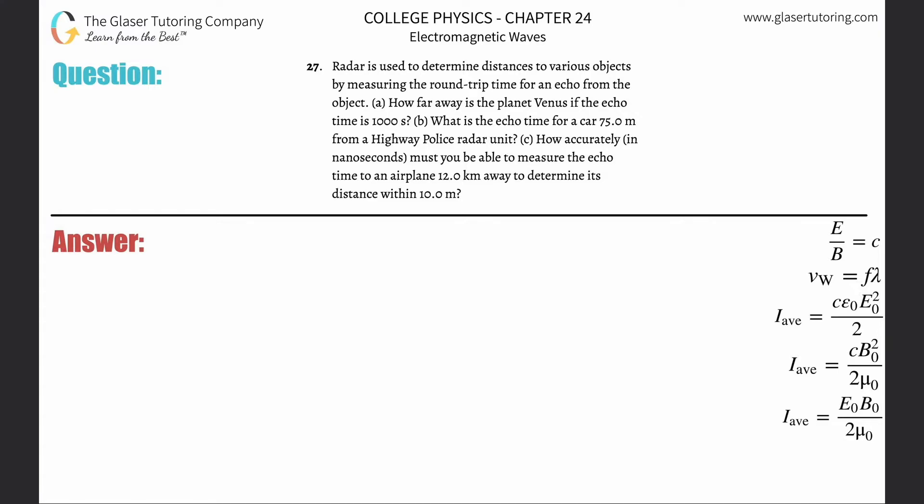Number 27. Radar is used to determine distances to various objects by measuring the round-trip time for an echo from the object. Letter A: How far away is the planet Venus if the echo time is 1,000 seconds?